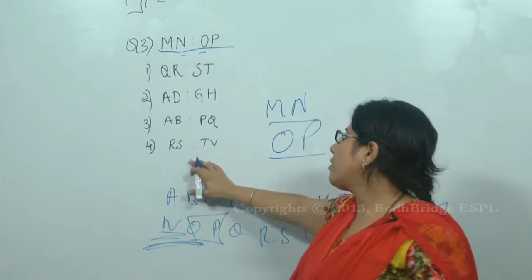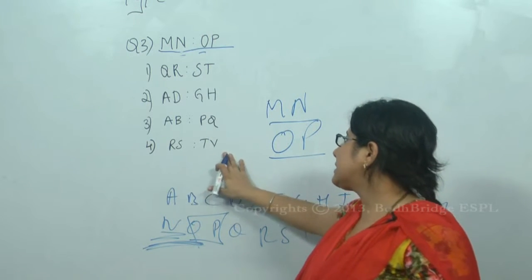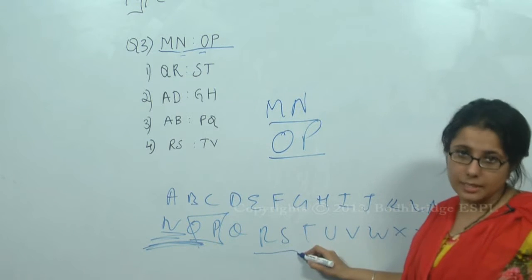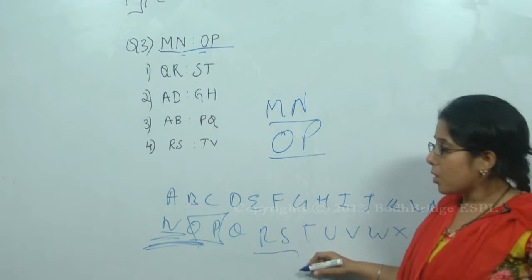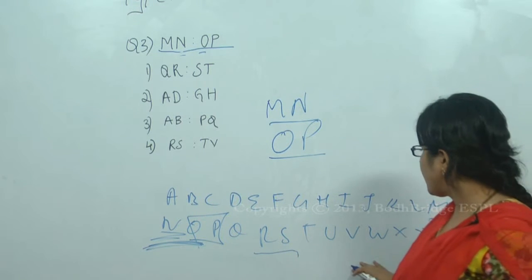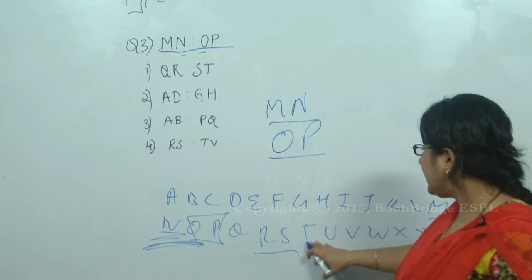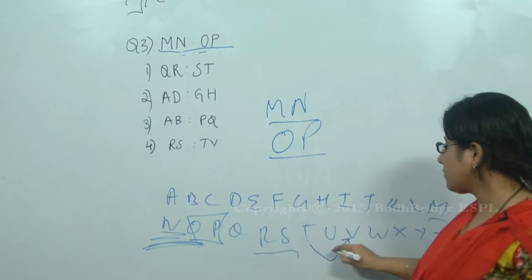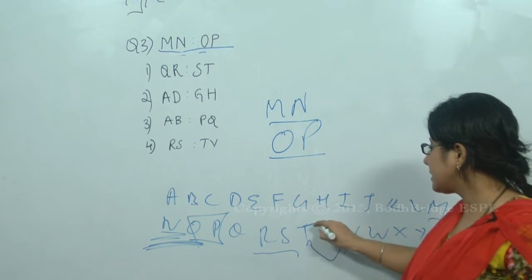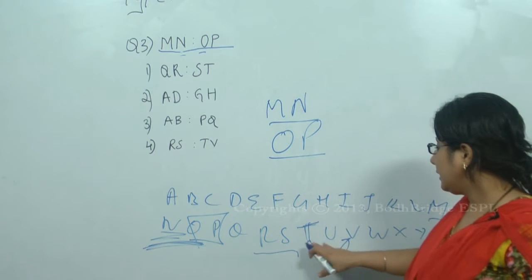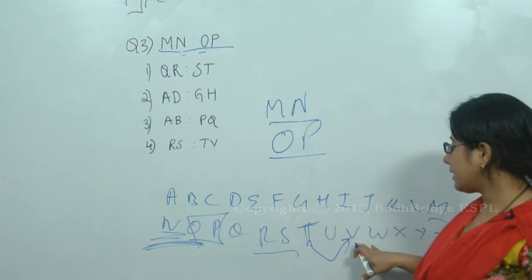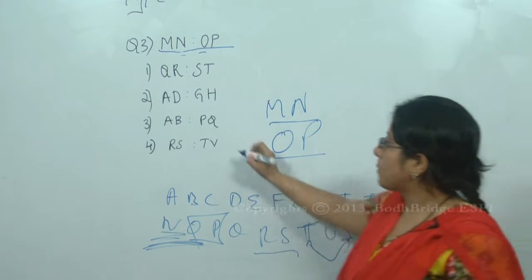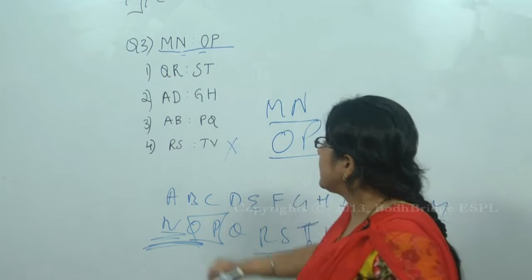Let's check option four: RS : TV. R and S are in consecutive order, but T and V are not — T is followed by U, not V. So option four is eliminated.